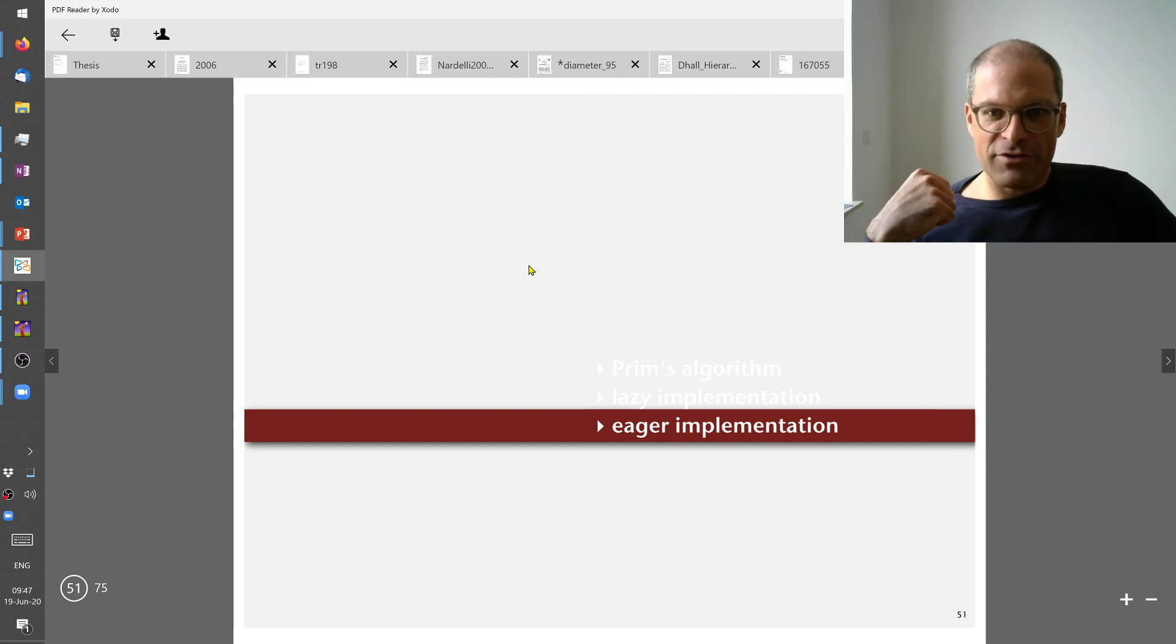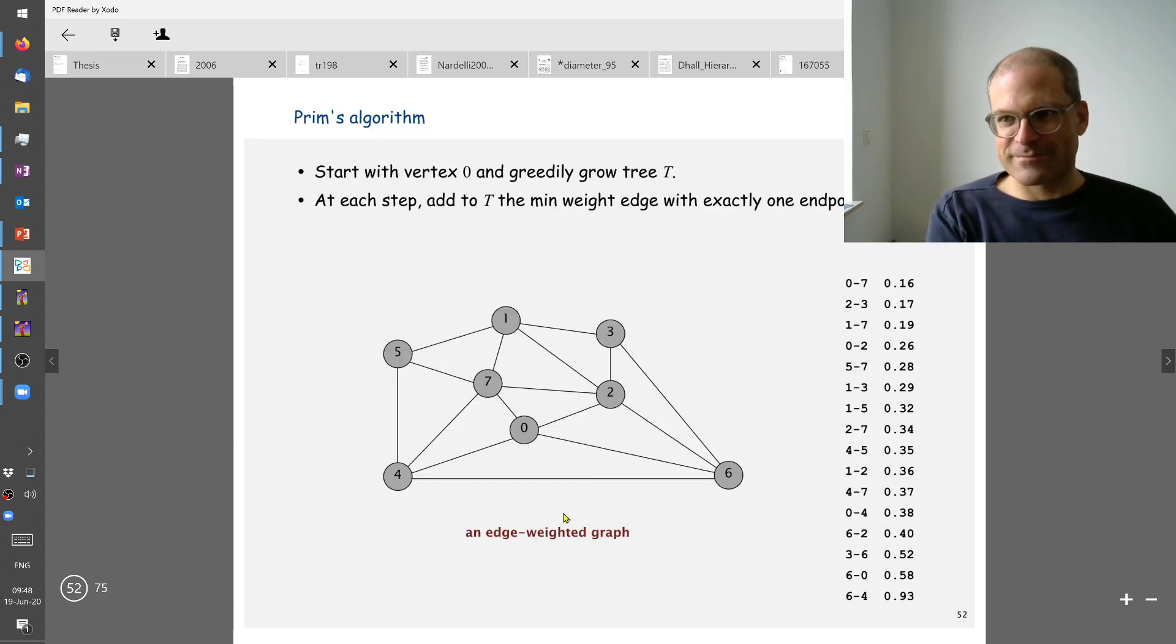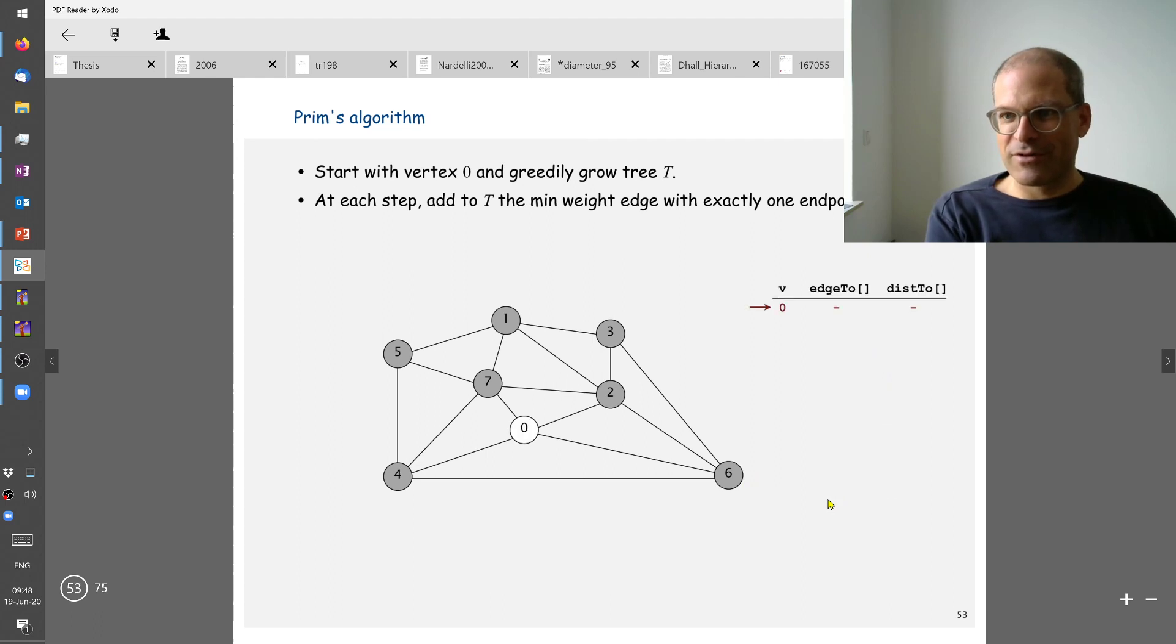There are various flavors of Prim's algorithm and this one here is the Eager implementation. So we start with some vertex and here on the right hand side we have all these costs which unfortunately are not drawn in the picture. But starting at zero we have these possible neighbors two, seven, four and six and we will now pick the lowest of these four costs. There are these four candidates.